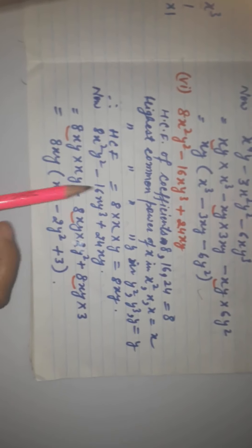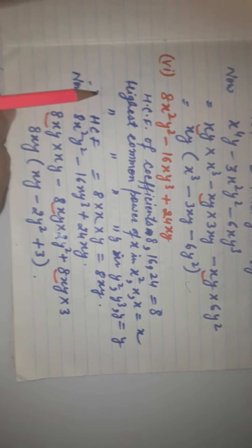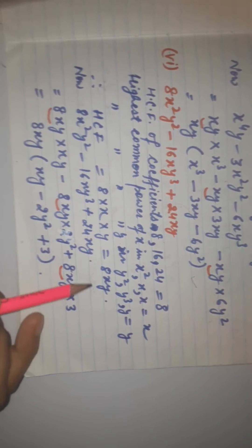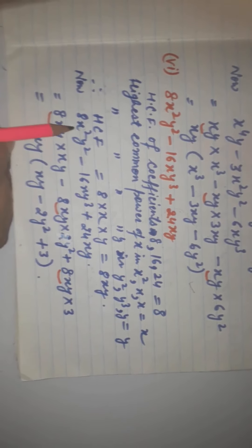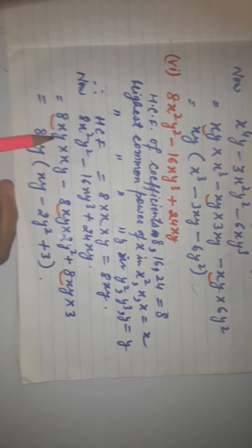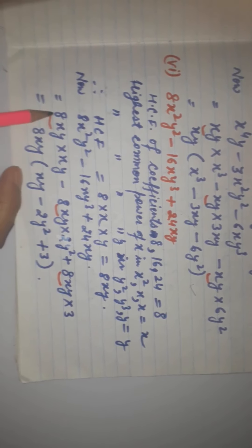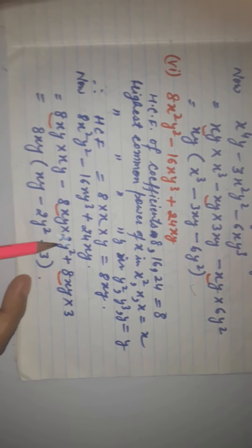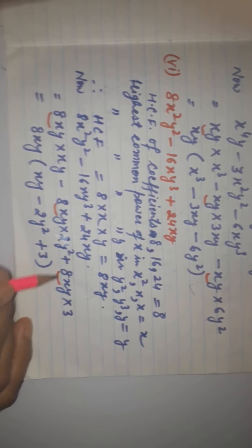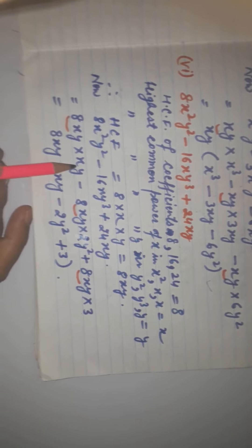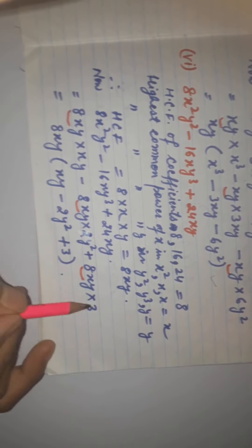The last part is similar. We find the HCF of all three terms, which is 8xy. We write each term with 8xy as one factor: 8xy into xy, 8xy into 2y², and 8xy into 3. Taking 8xy common, we get 8xy(xy minus 2y² plus 3). This is the factorized form of the last expression. Hope you all understood this important concept of factorization of algebraic expressions. Thank you, have a nice day!